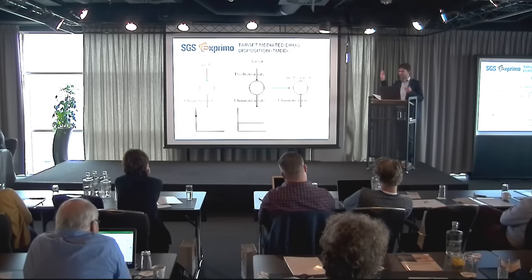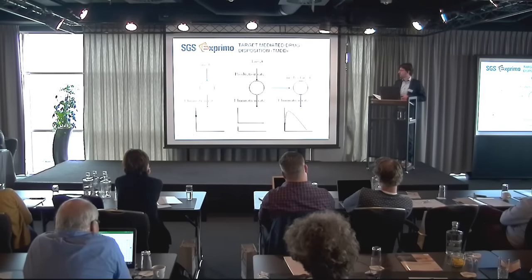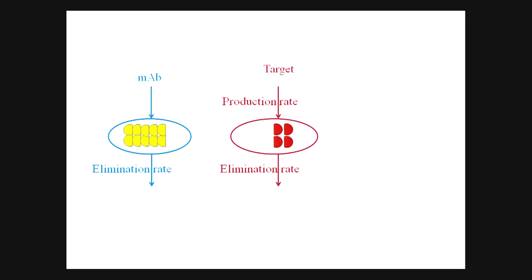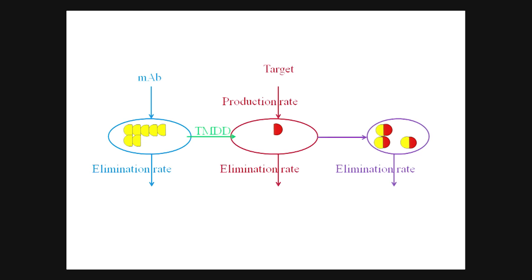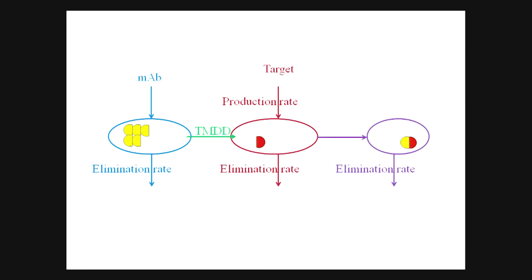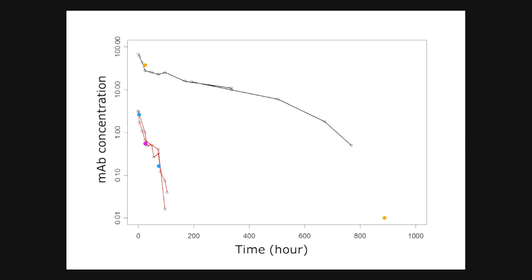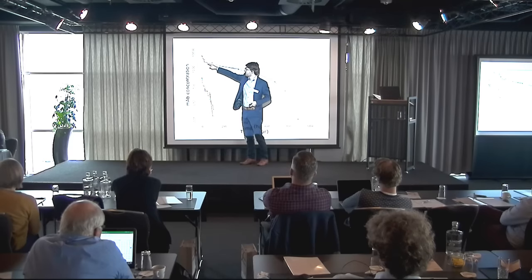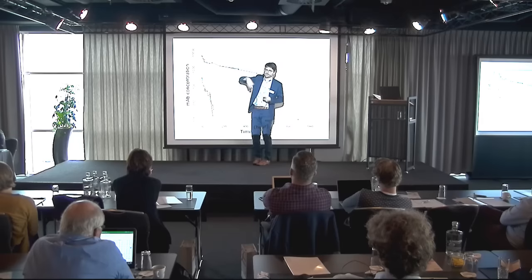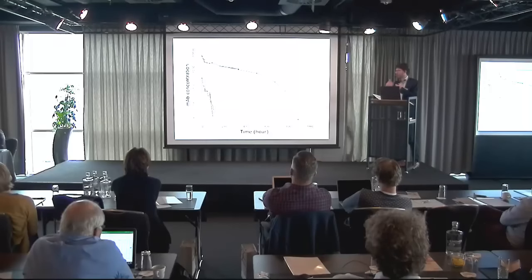Let's try and explain that very weird graph we saw. What happens if we now give a lot of compound — a very high dose? A part of this will bind with our target, but not everything. We eliminate a part, and then suddenly we see that nothing more is going to that right route — no complex is formed, because all of the target is depleted. The body can't create the target fast enough for that elimination route to happen. So the compound is only eliminated through the compound itself, and not through the complex, until the concentration is low enough, and then you can again eliminate through both routes.